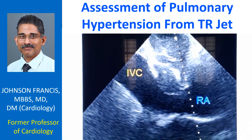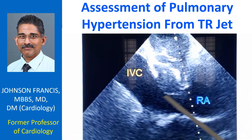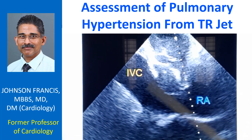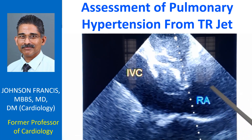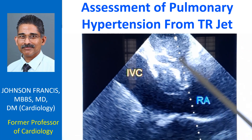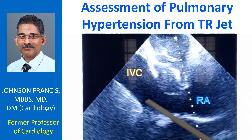Usually, a nominal 10 mmHg right atrial pressure is added to the observed tricuspid regurgitation gradient to get the right ventricular systolic pressure. But when the inferior vena cava is grossly dilated and has no inspiratory collapse — normally the inferior vena cava collapses in inspiration — if it is grossly dilated and there is no collapse in inspiration, that is known as IVC plethora. In that case, you may have to add higher values: instead of the nominal 10 mmHg right atrial pressure, you might add 20 mmHg, so that instead of 47 mmHg we would calculate it as 57 mmHg. Note that this example is from a different case, not the same case as the initial tricuspid regurgitation CW jet shown earlier.